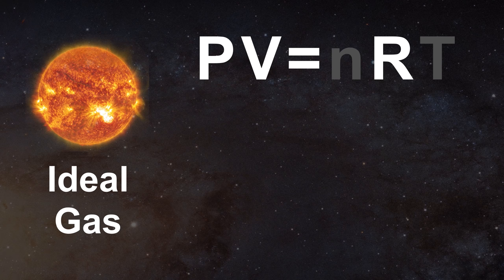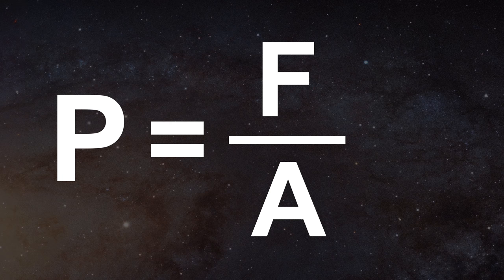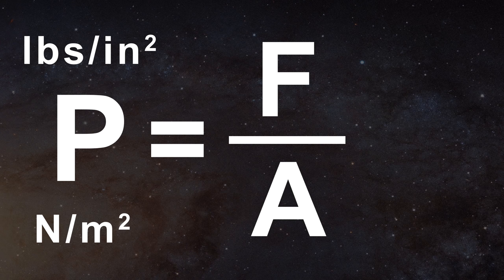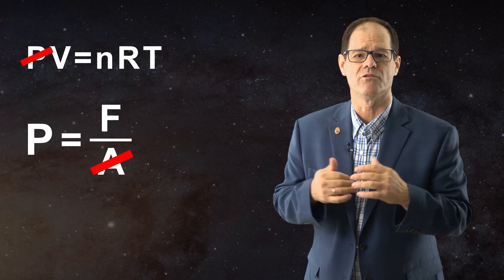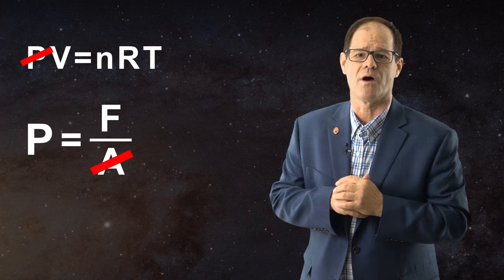Now the problem with utilizing the ideal gas law to treat the interior of a gaseous sun is relatively easy to explain. How do we define pressure? It's the amount of force applied to a given area. For instance its units are often expressed as pounds per square inch or newtons per square meter for our friends outside the United States. Unfortunately in the gaseous model of the sun there are no real surfaces by which pressure can even be defined. There is no area in the force over area definition of pressure and that makes the ideal gas law unusable. Astronomers use imaginary surfaces in their model to skirt around this problem but as will be seen below this is not a solution.